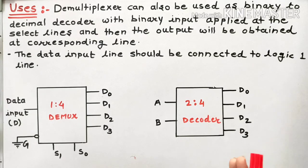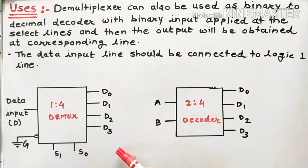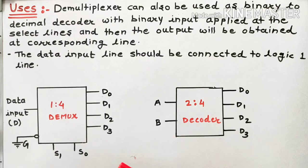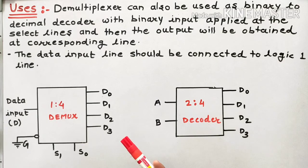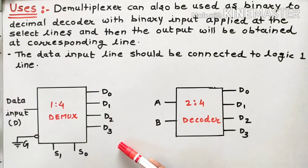First of all, you should have a clear idea of what a demultiplexer is. A demultiplexer is a digital device having only one input and n number of outputs, along with m number of select inputs. Here we are using a 1-to-4 demultiplexer, which has a single data input and 4 outputs starting from D0 to D3.